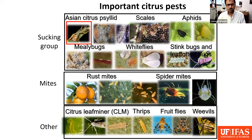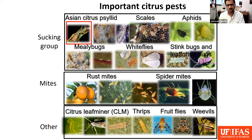These are some of the important pests that colonize citrus crops. Of course, Asian citrus psyllid is the most important — it's widespread, and the disease is widespread across the state, so that's why it is of prime importance. But then we also get scales, aphids, mealybugs, whiteflies, and stink bugs or leaf-footed bugs as a second group. Then we have mites — rust mites and spider mites are important.